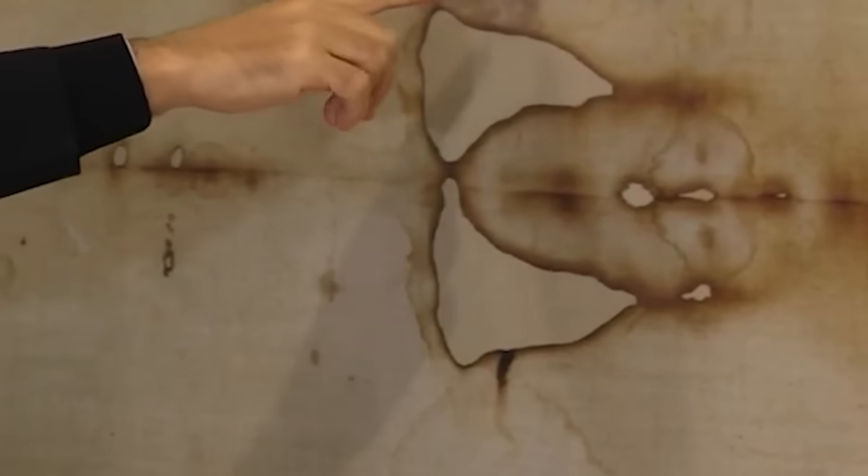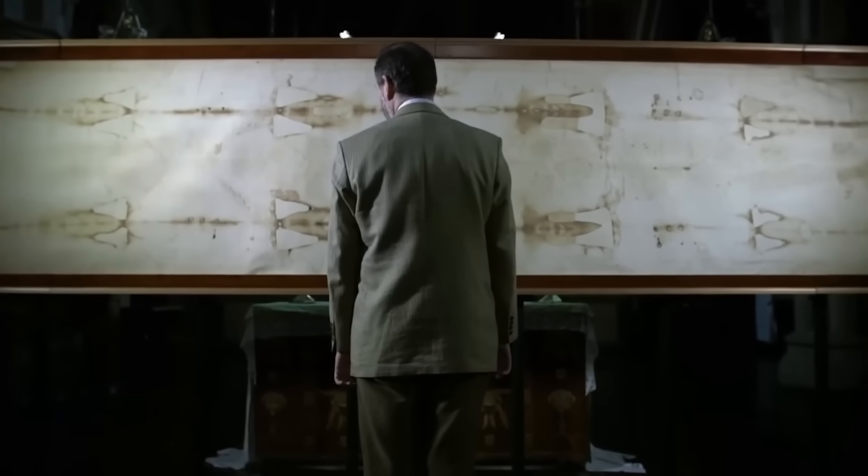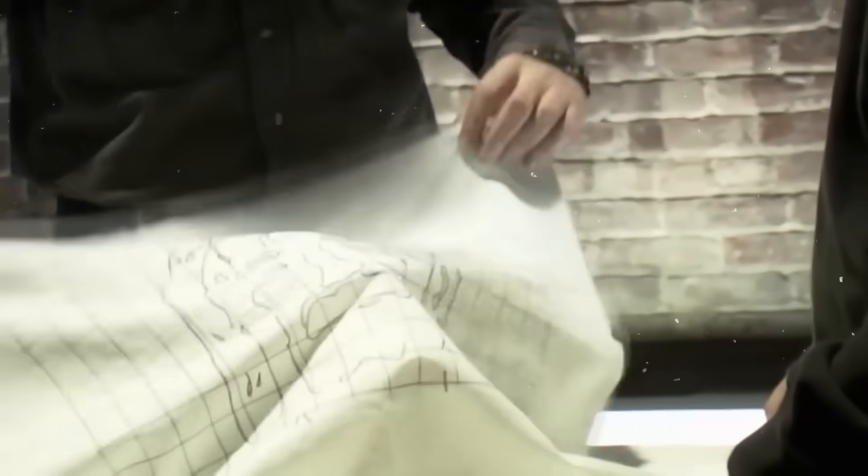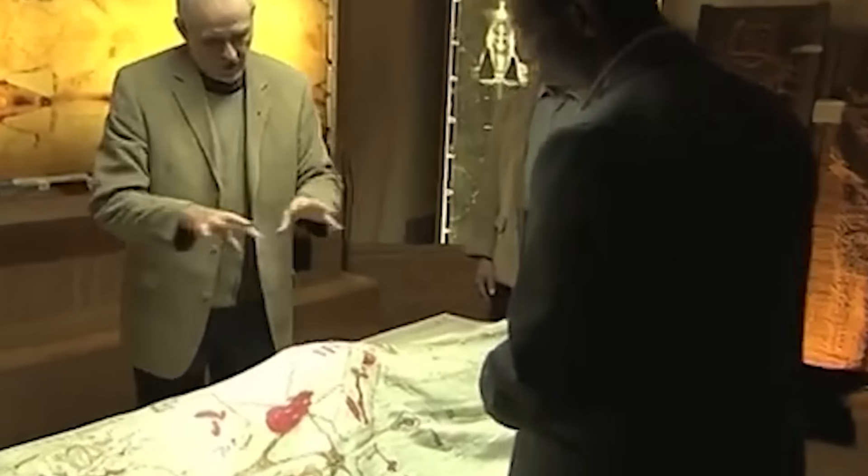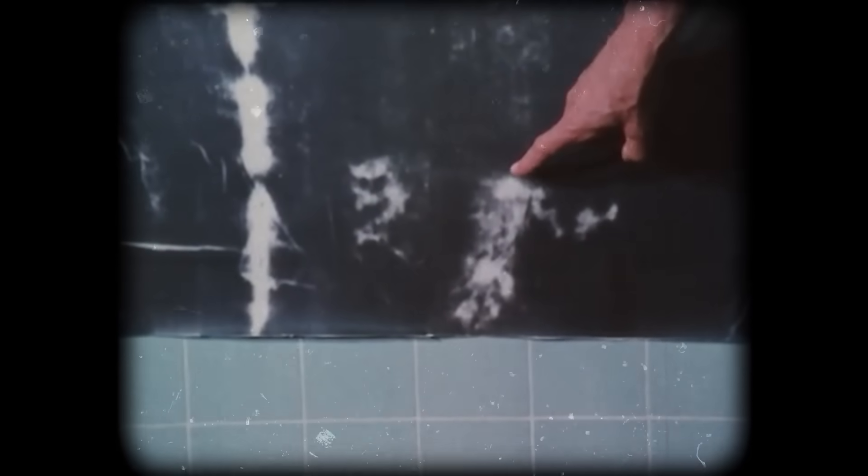This is the context that makes the AI's discovery so important. The AI didn't need a physical sample. It bypassed the entire controversy over the repaired corner. It analyzed the image itself. The one thing everyone agrees is the central mystery. The patterns it found are not dependent on the age of the cloth. They are inherent to the image formation process.